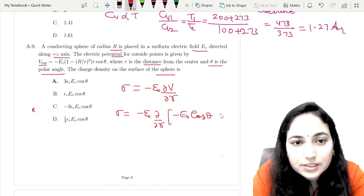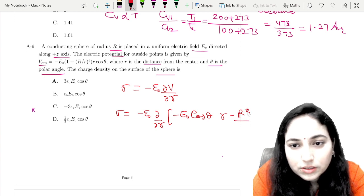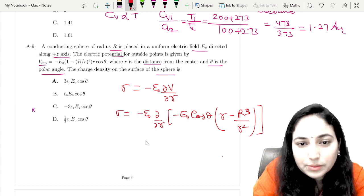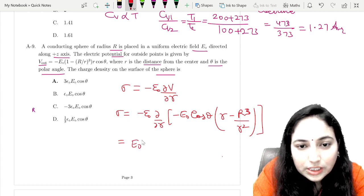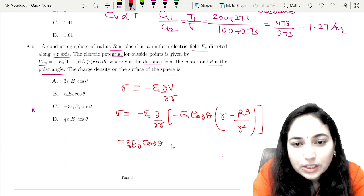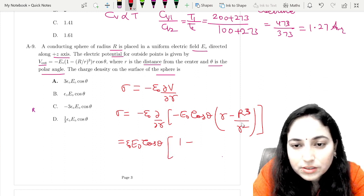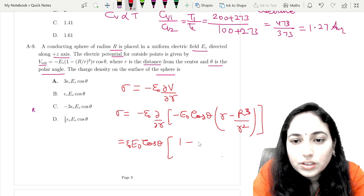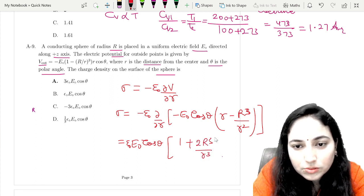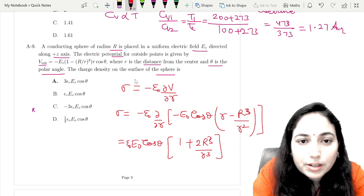This becomes r minus R³ upon r². Solving this, we get epsilon₀ E₀ cos theta times (1 minus something). We need to find del by del r, which gives 1 plus 2R³ upon r³.